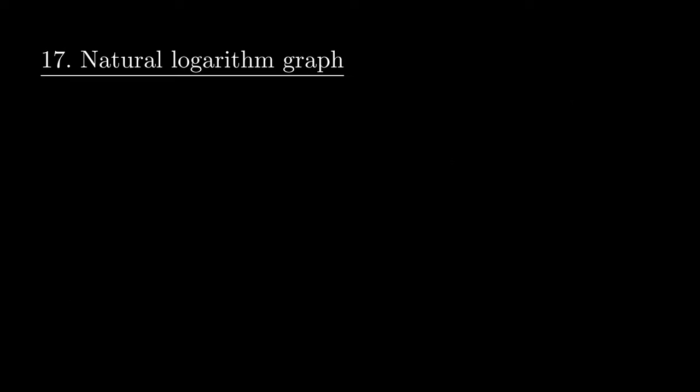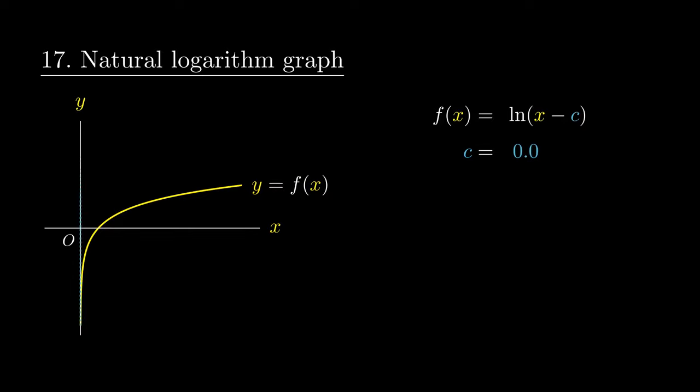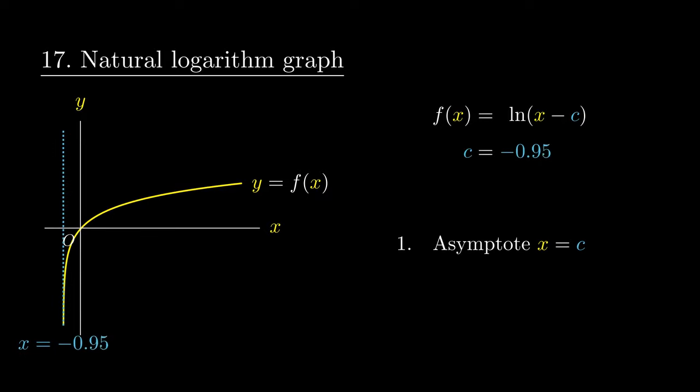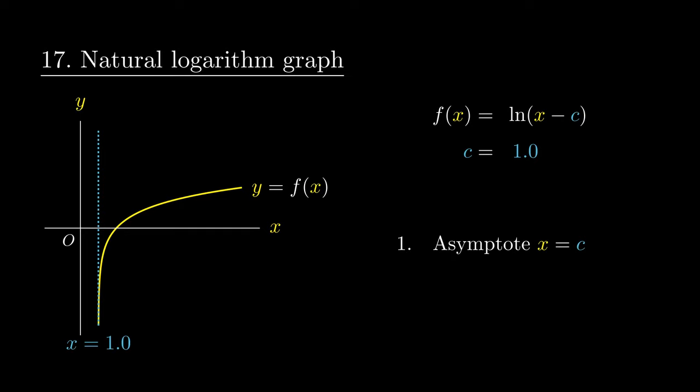Its general equation is ln of x minus c. And as we change the value of c, the value that this function is limited by also changes by c. In this case, we call x equals c the asymptote of the logarithm function. Let's set c to equal 1.